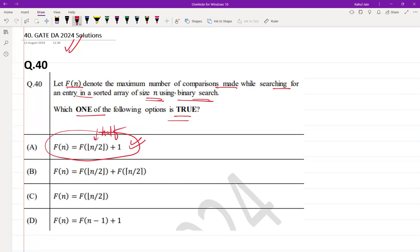The problem every time will be reduced to half because of this F(n) by 2, and we are taking the floor value of it. So this is the correct answer because it reflects the maximum comparison which is going to be made during the search.